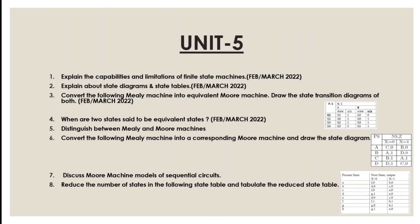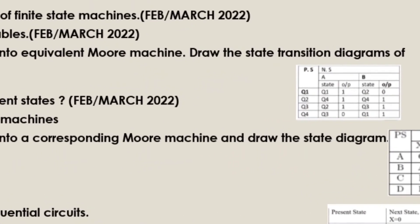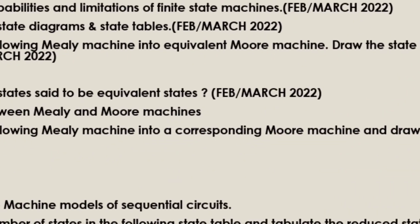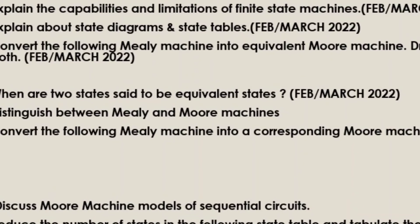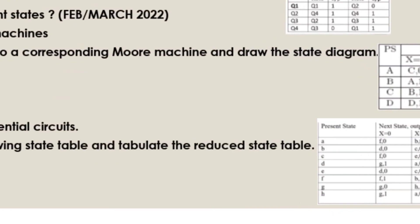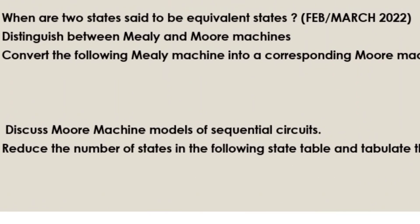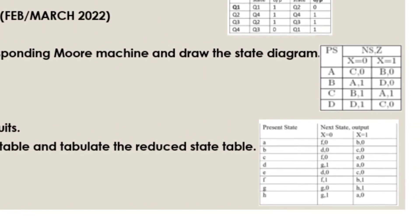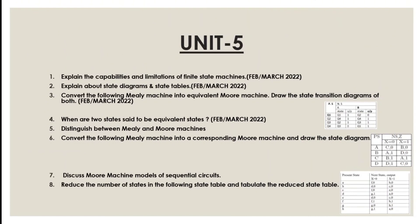Unit 5: Explain the capabilities and limitations of finite state machines. Explain state diagrams and state tables. Convert the following Mealy machine into an equivalent Moore machine. Draw the state transition diagram. When are two states considered to be equivalent states? Distinguish between and compare Mealy and Moore machines. Convert the following Mealy machine into a corresponding Moore machine and draw the state table. Discuss the Moore machine model of sequential circuits. Reduce the number of states in the following state table.